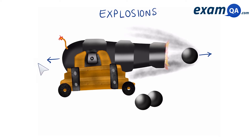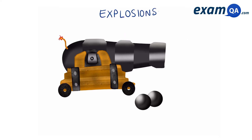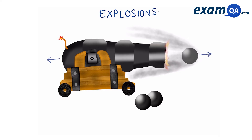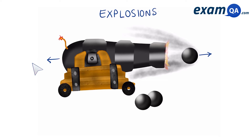Just like the previous example of explosions, the total momentum before was zero since nothing is moving. Therefore the total momentum after, when you shoot the cannon and the cannon moves backwards, should also be zero.